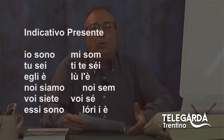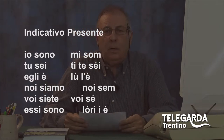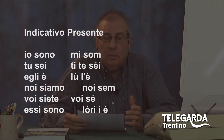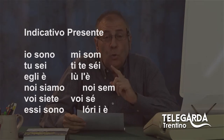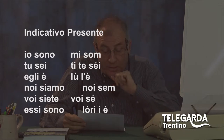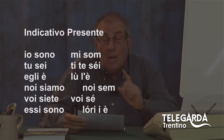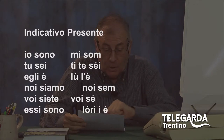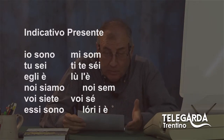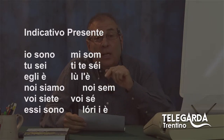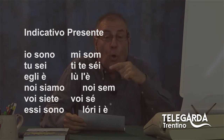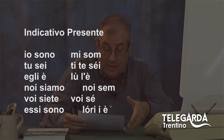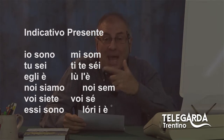In dialetto come diventa? Mi som (io sono). Ti te sei. Lu, perché non esiste la parola 'egli', lulè. Noi sem. Voi se, con l'accento fonico chiuso. Lori, perché non esiste 'essi', lori iè.